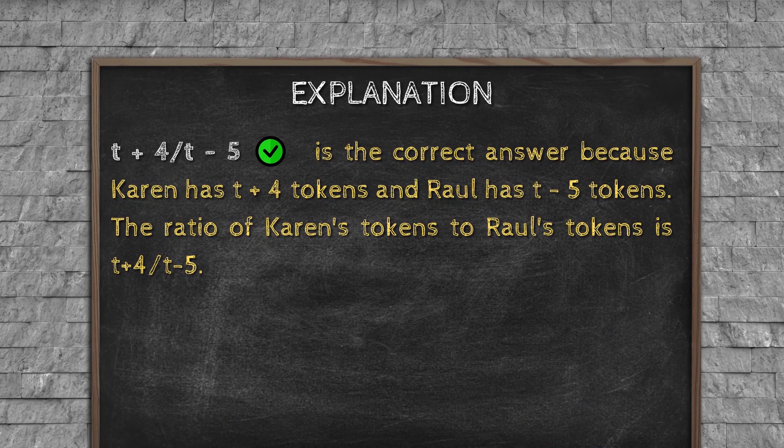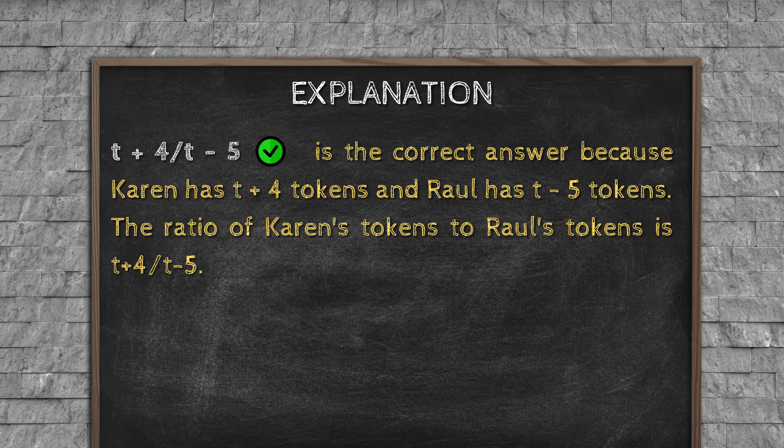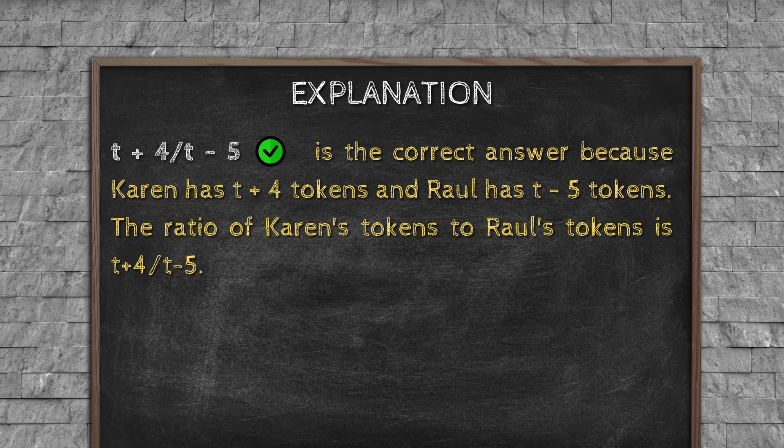Explanation: (T + 4)/(T - 5) is the correct answer, because Karen has T + 4 tokens and Raul has T - 5 tokens. The ratio of Karen's tokens to Raul's tokens is (T + 4)/(T - 5).